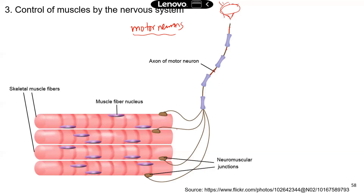A lot of times each motor neuron can control multiple muscle fibers. You can see this is almost the end of the axon, and it splits to different axon terminals — that's one axon terminal, and that's another axon terminal. This is how one motor neuron can control multiple muscle cells.